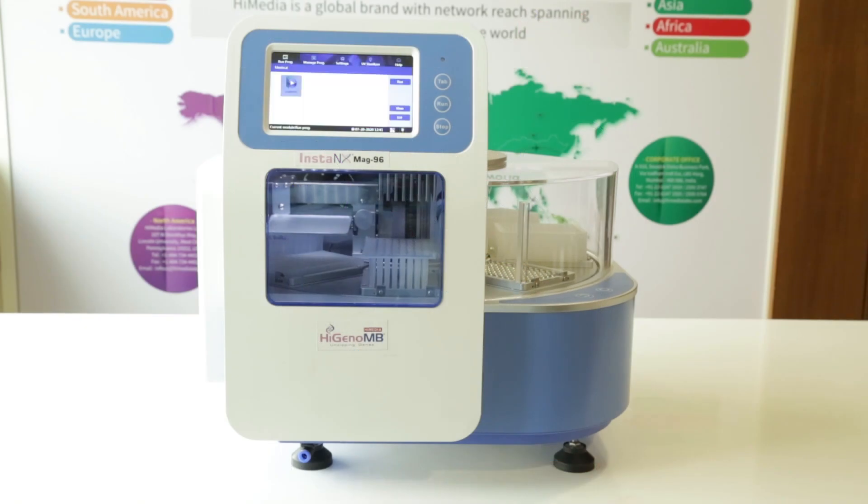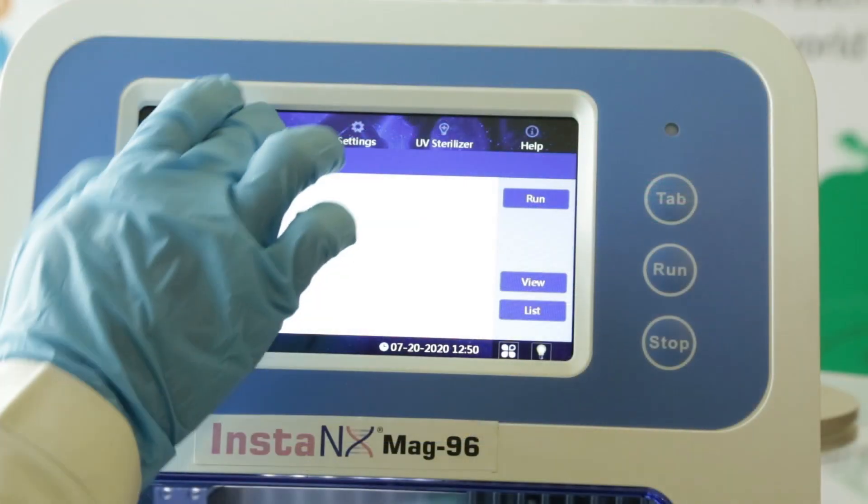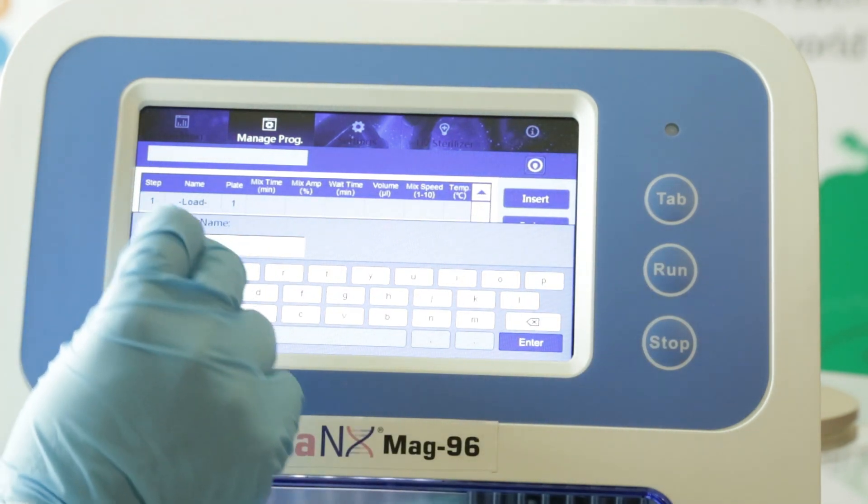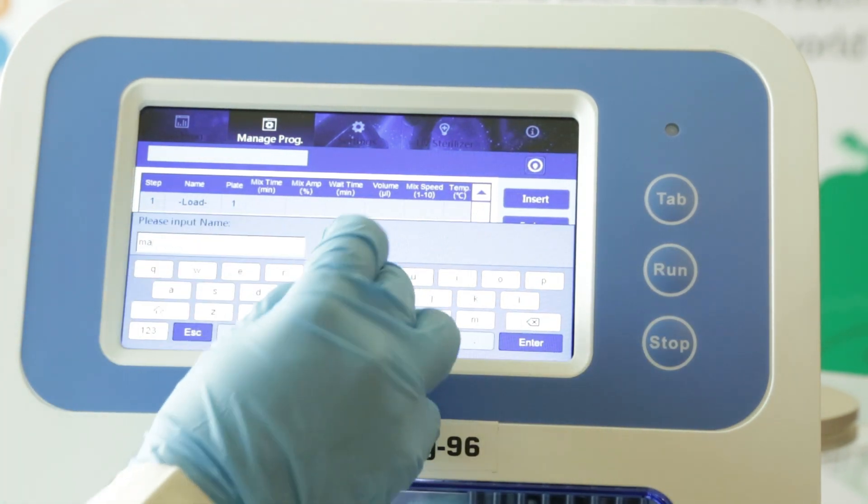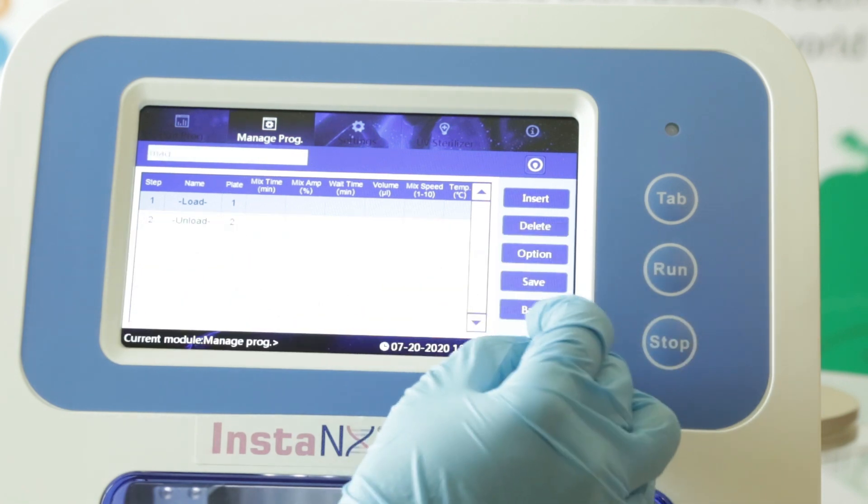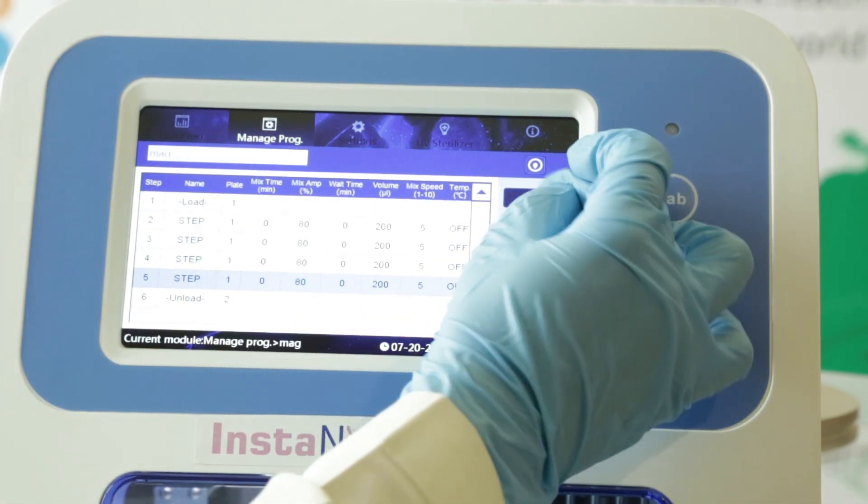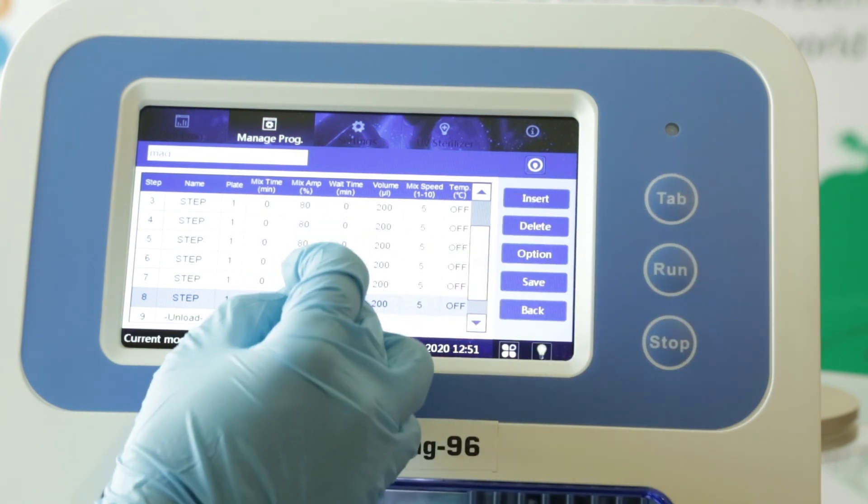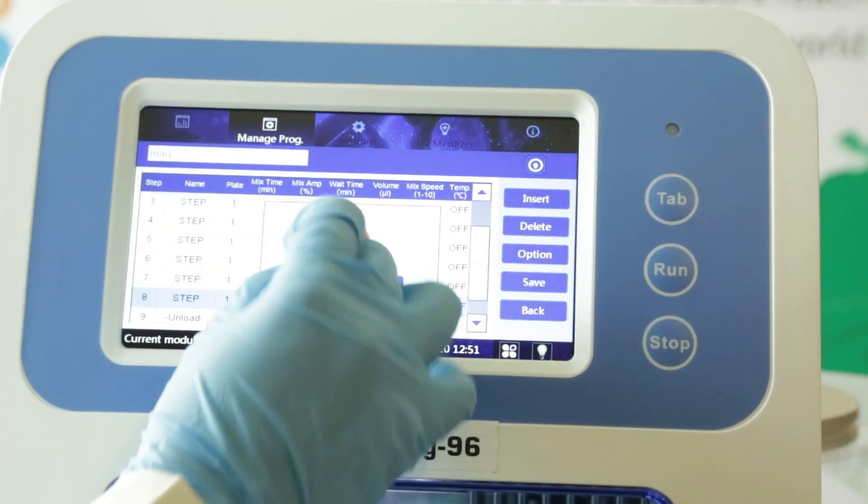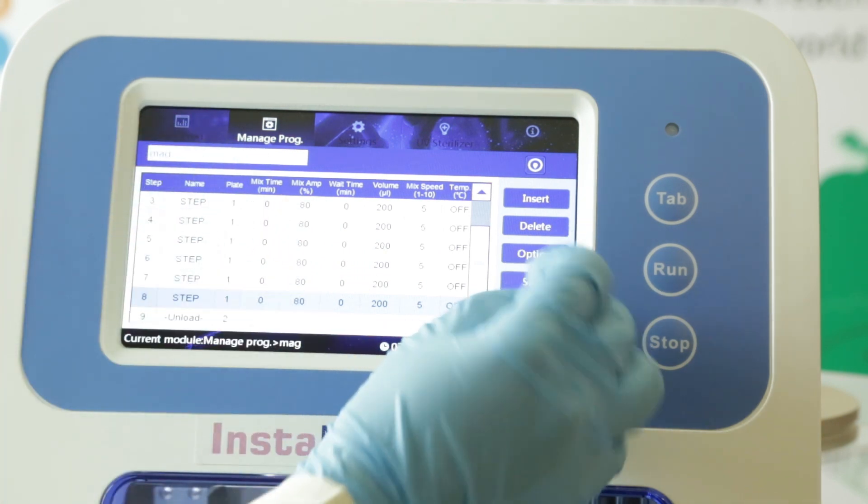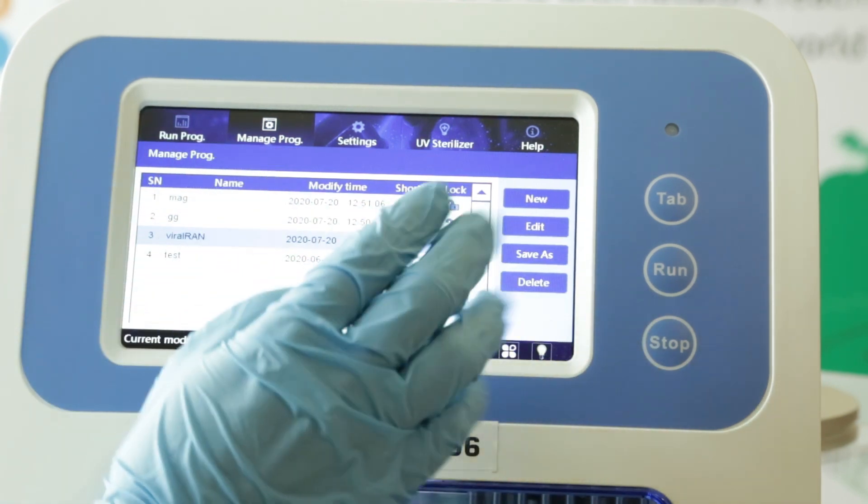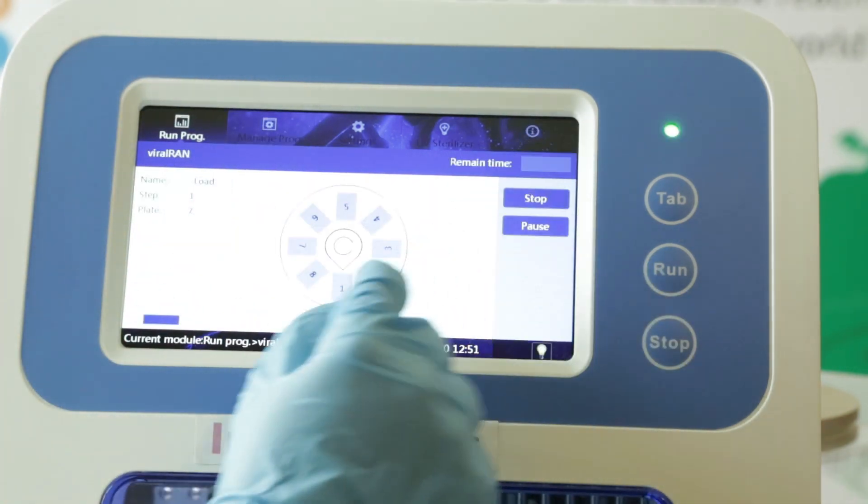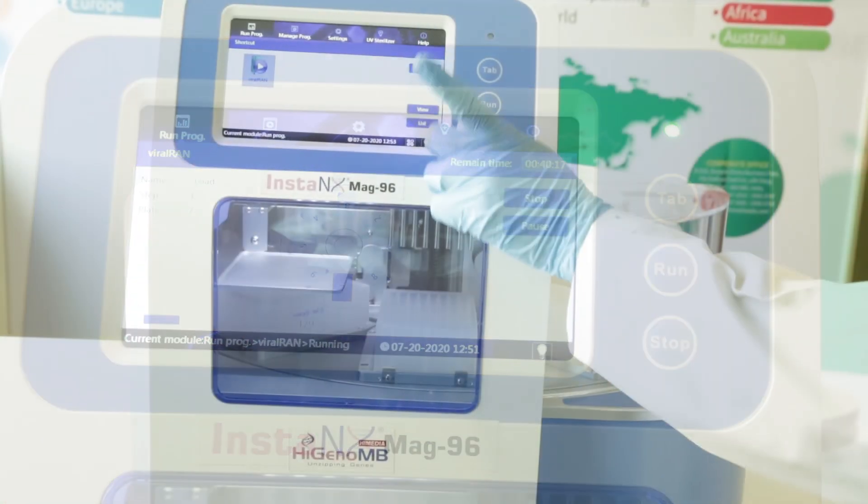HiMedia's molecular biology division launches a brand new series of magnetic bead-based automated nucleic acid extraction systems. InstaNX MAG96 automated nucleic acid extractor is the latest state-of-the-art instrument for processing as many as 96 samples. The 7-inch LED display screen allows the user to set up runs depending on the protocol being used. The versatile and open machine is capable of being programmed based on the kit being used.